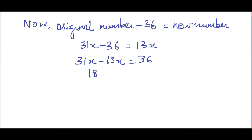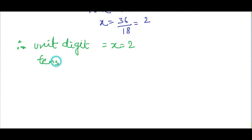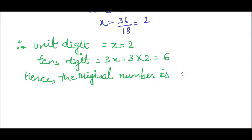Subtracting 31 minus 13 gives us 18x equals 36, so the value of x equals 2. The units digit is 2 and the tens digit is 3x which is 6. So the original number is 62.